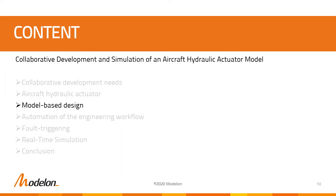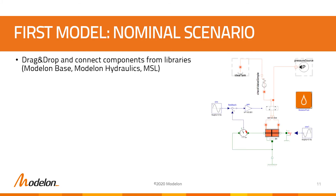Let's now illustrate how we can size such an actuator with the help of Modelica models. The first step in building the model is to drag and drop components and connect them together. We rely on libraries that are built in Modelon Impact, such as Modelon Hydraulics, the Modelon Base Library, and the Modelica Standard Library. When building models for sizing part of the system, it makes more sense to assemble the system first with the relevant fidelity.